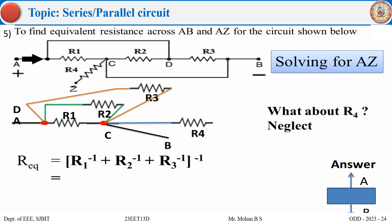Now let us solve for AZ. Until here the steps are same. Now where is point Z? Yes, I hope you have identified correctly - it is after R4. When I consider point Z, the points A and B are not valid now.